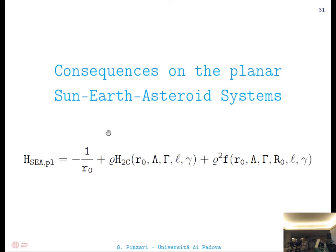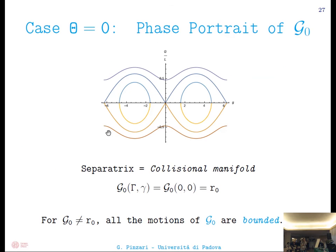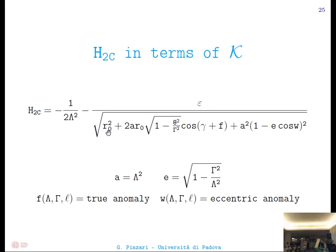From what you said about the homoclinic manifolds in the first part of the Hamiltonian — besides the difficulty of the Melnikov function — do you think it will be complicated to prove the splitting of the manifolds, and why? The Melnikov function is always difficult to compute. In this case, one has to understand the motion along the homoclinic orbit, and that motion cannot be found using perturbative arguments because you are near a collision. So it is still a problem to find the amplitude of those oscillations. Thank you very much.